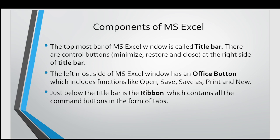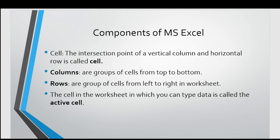Just below the title bar, there is a ribbon which contains all the command buttons in the form of tabs. Next is cell. The intersection point of a vertical column and horizontal row is called cell.